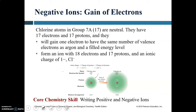Chlorine in group 7A as an atom is neutral with 17 electrons and 17 protons. It gains one electron, giving it the same valence electrons as noble gas argon, with eight electrons filling the outer energy level. The result is an ion with 18 electrons and 17 protons, so the charge is -1.